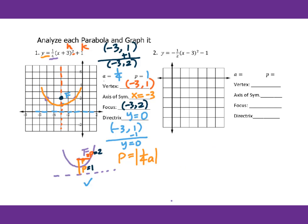For number 2, we predict the graph opens down because a is negative. The focus is inside the curve. The distances from vertex to focus and vertex to directrix are both p. We know a equals negative 1 half, so p equals the absolute value of 1 over 4a, which gives p equals 1 over 2. The vertex is at 3, negative 1.